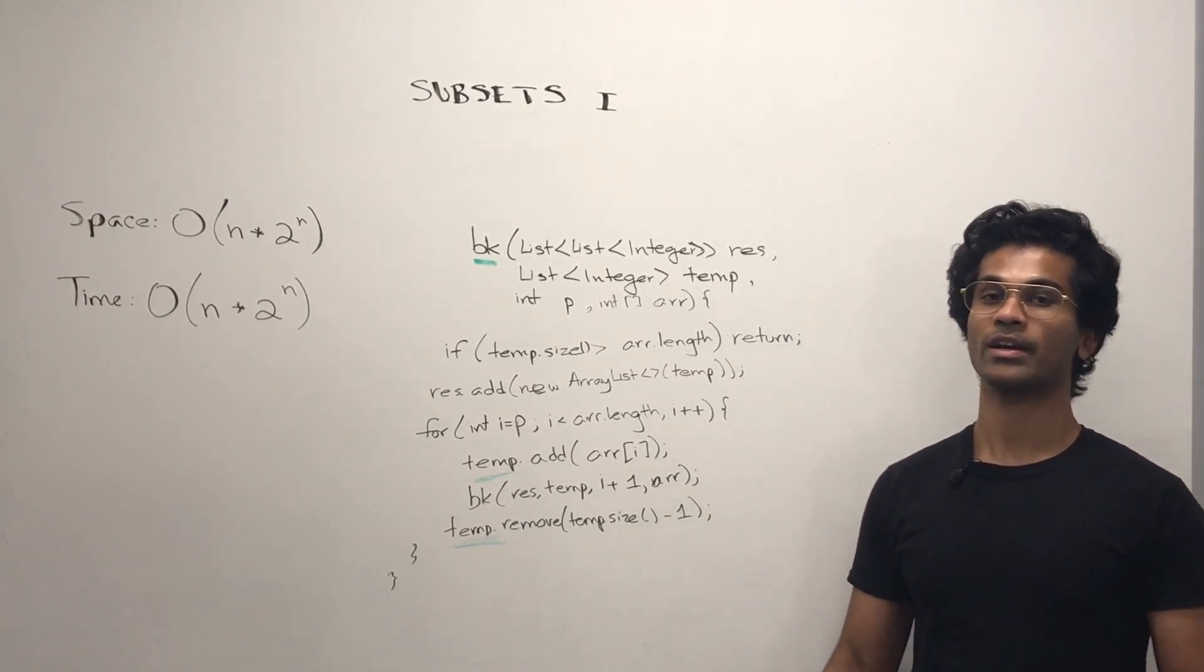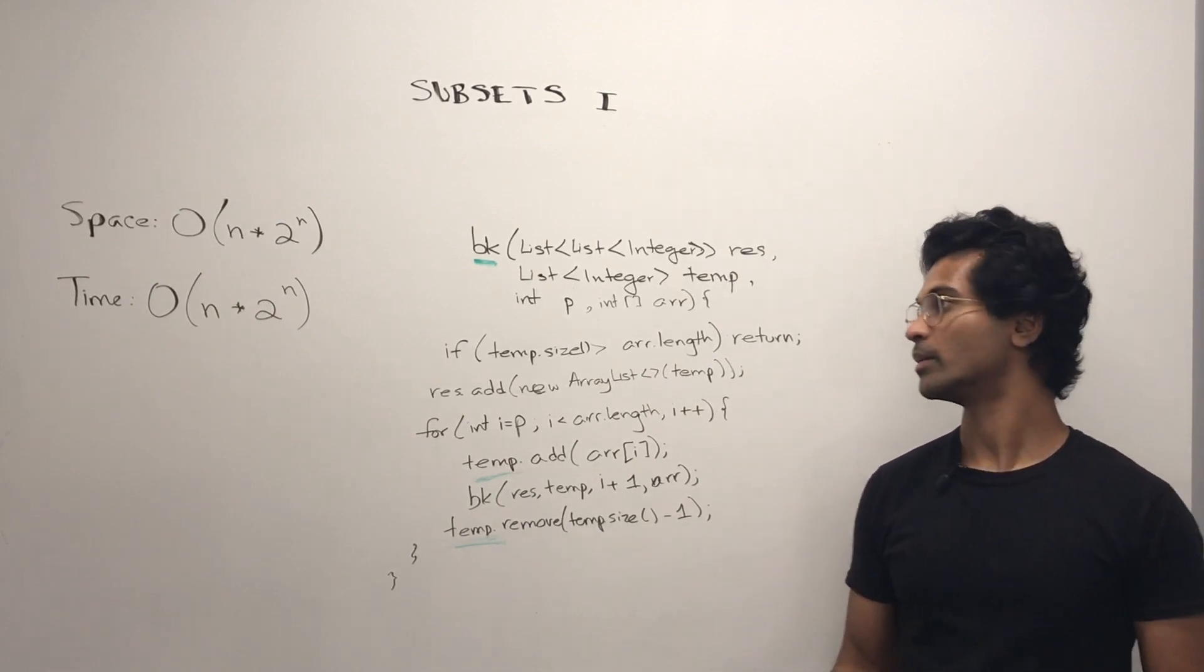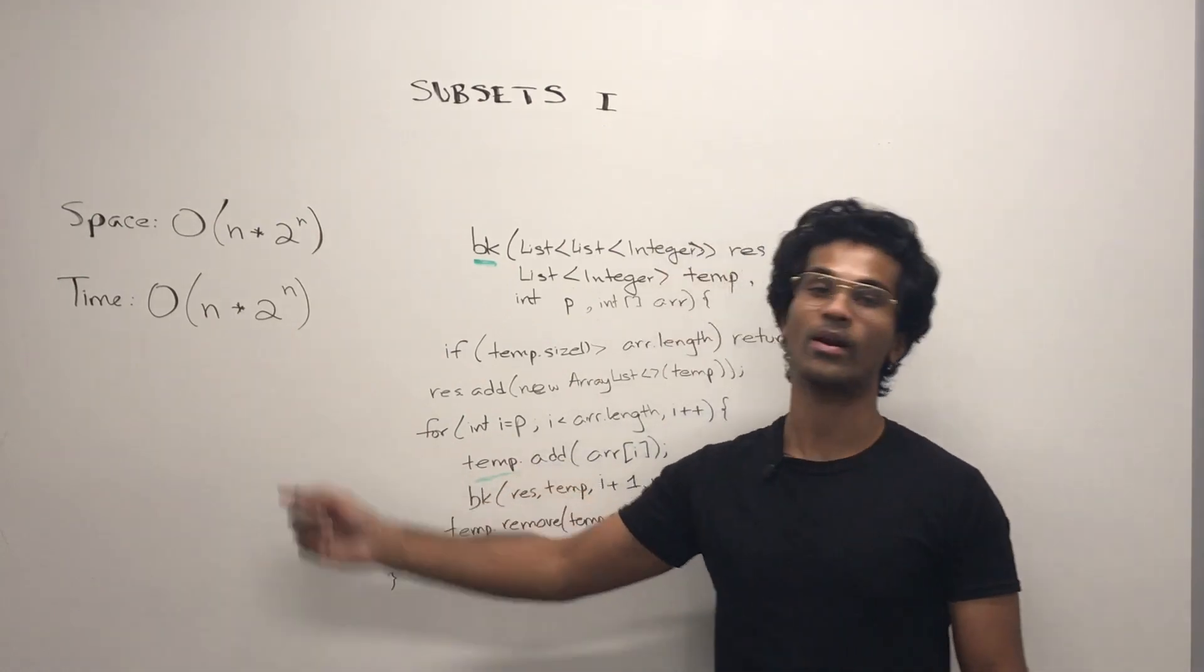So that's why, combinedly, all of the recursive stacks are going to be added up. And ultimately, we're going to have n times 2 power n.